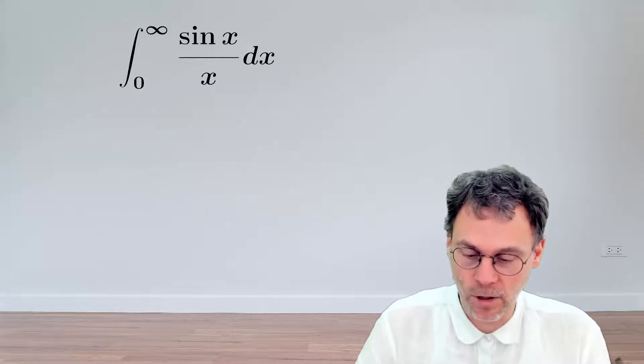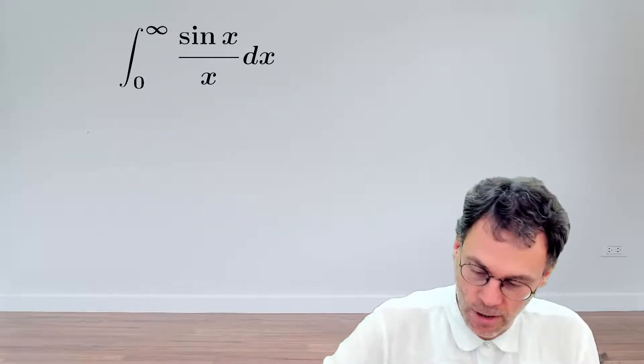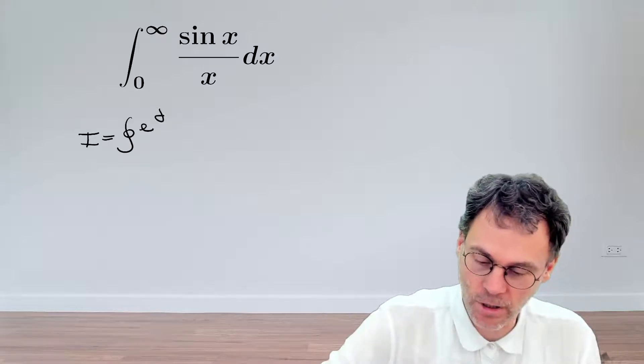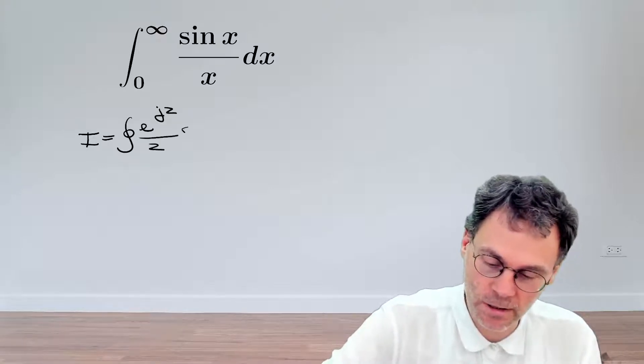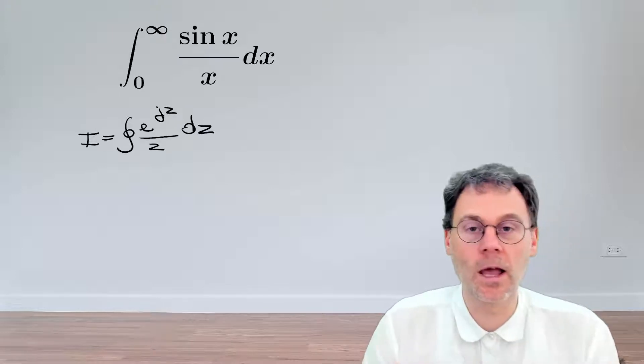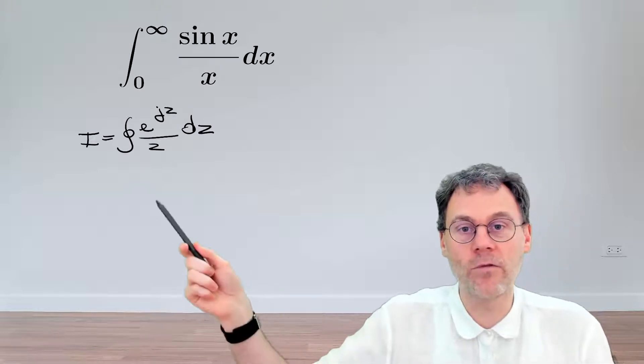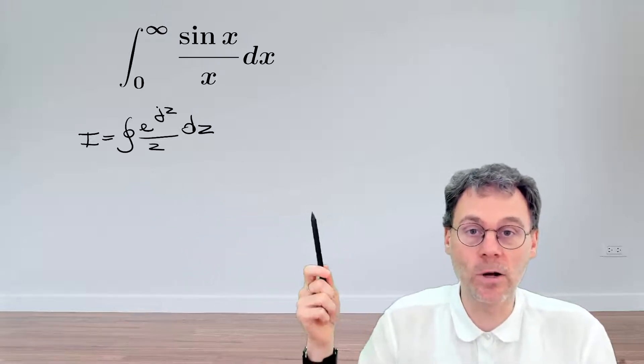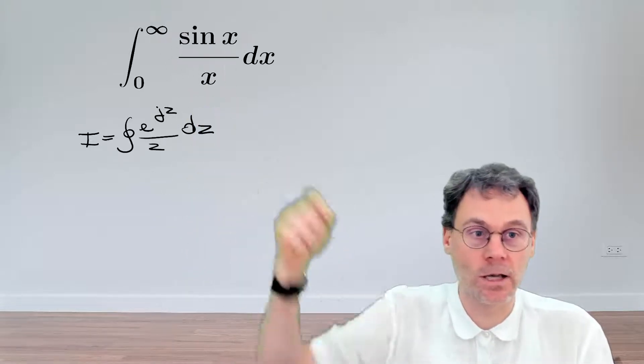So we settled on the following approach, calculating the complex contour integral of the function exponential jz divided by z. And then this guy, if we evaluate the integrand along the real axis and take the imaginary part, will give us sin x over x.